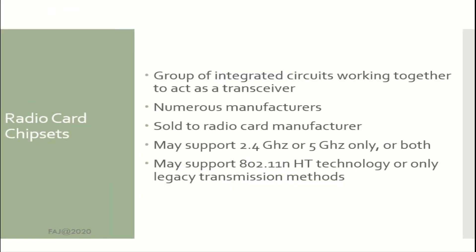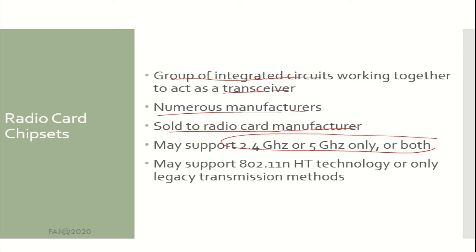Radio Card Chips is a group of integrated circuits working together to act as a transceiver, from numerous manufacturers. A radio card manufacturer may support 2.4 or 5 GHz only, or both. It may also support 802.11 N/HT technology or only legacy transmission methods.